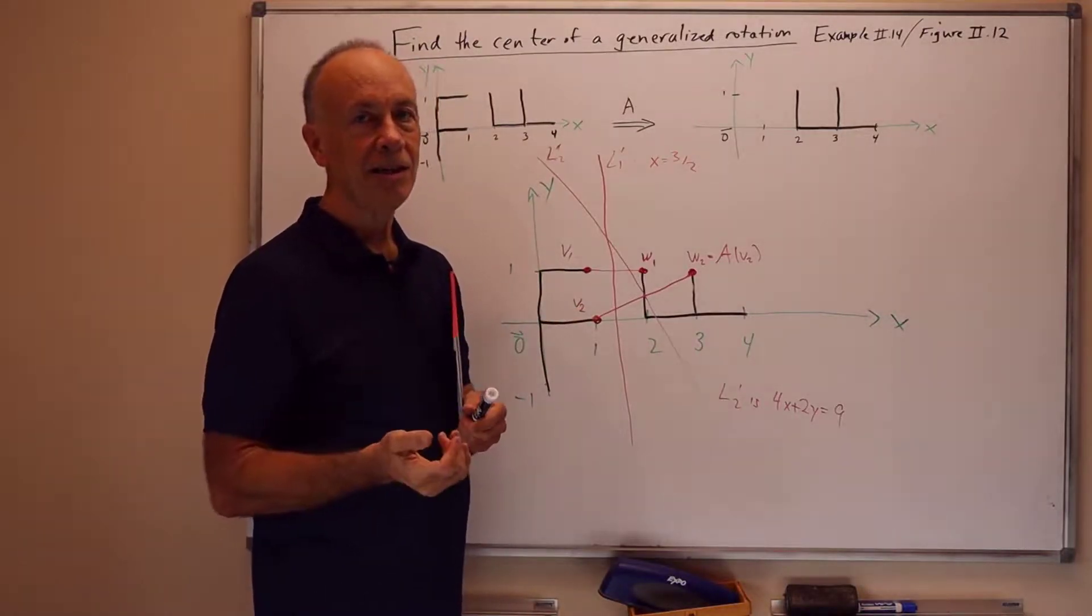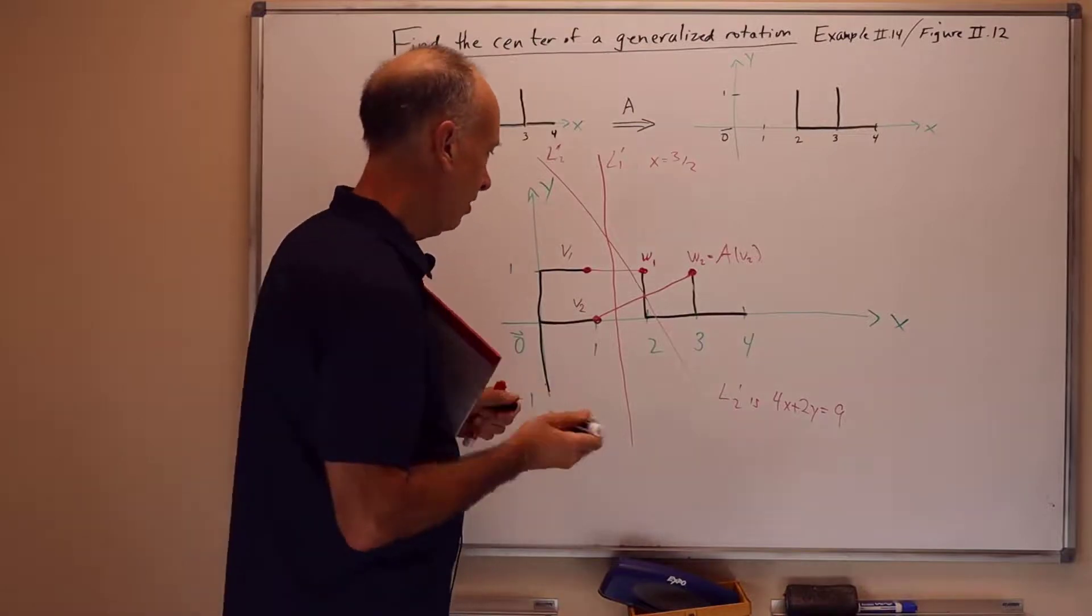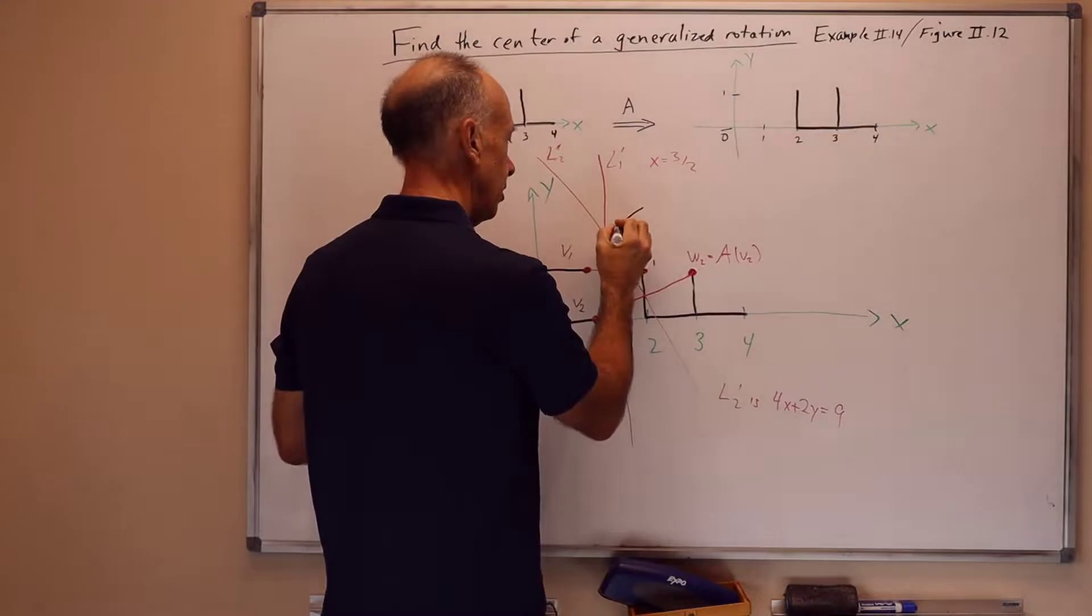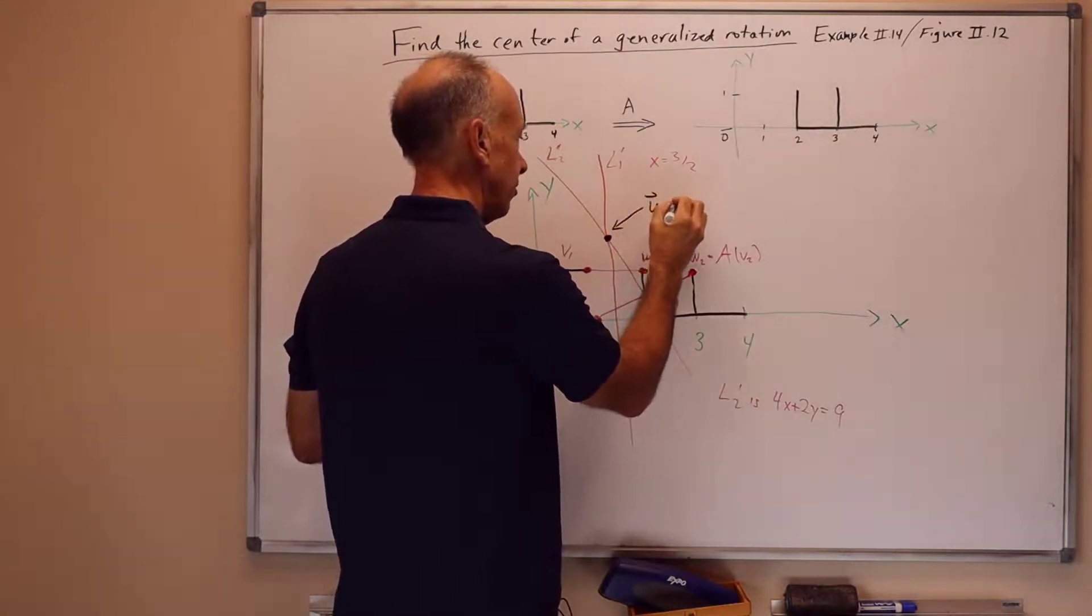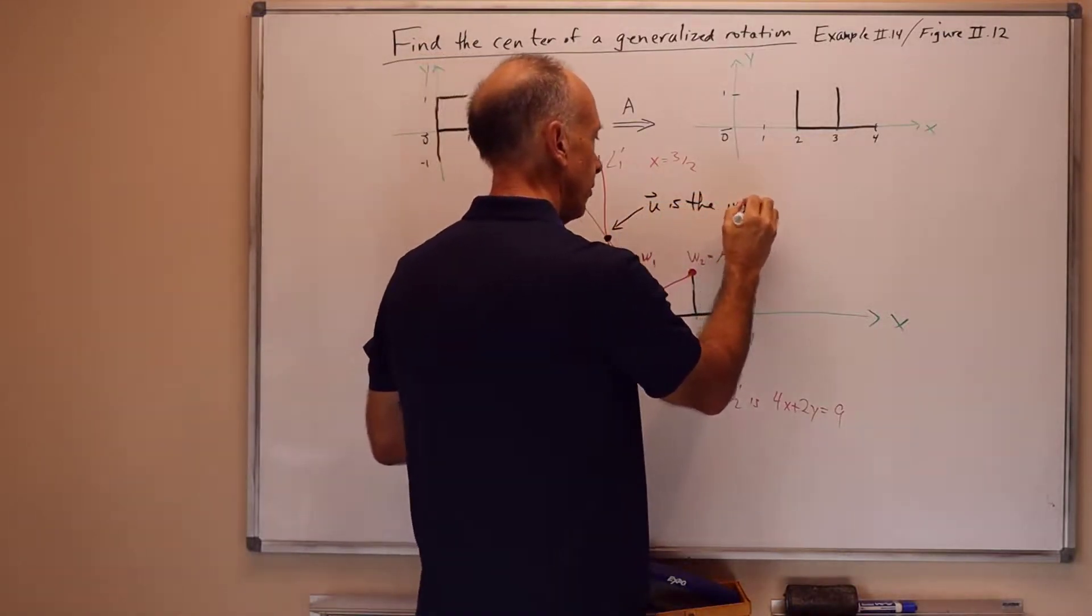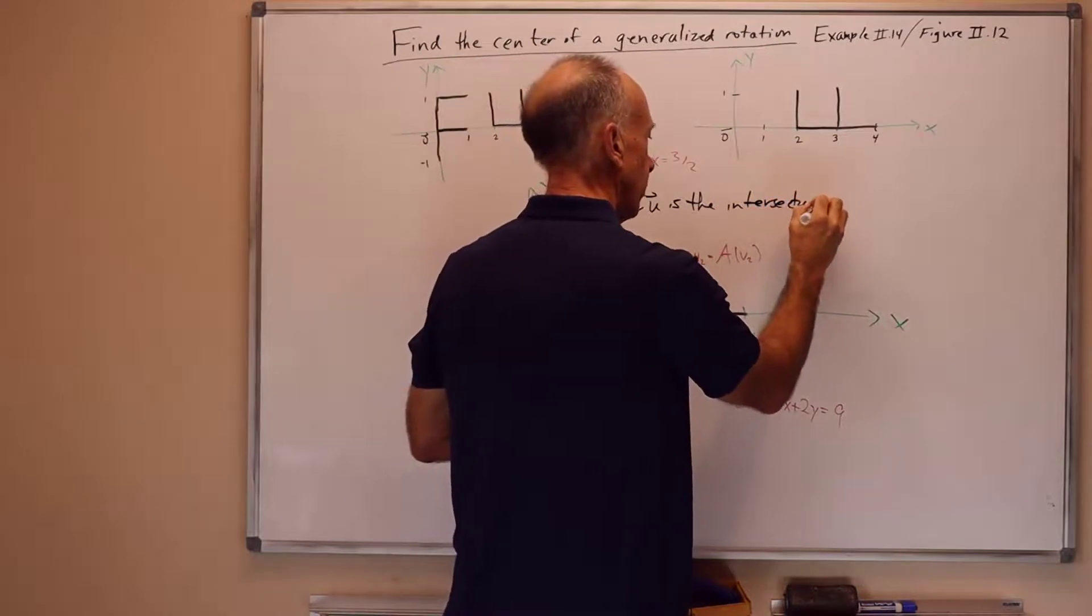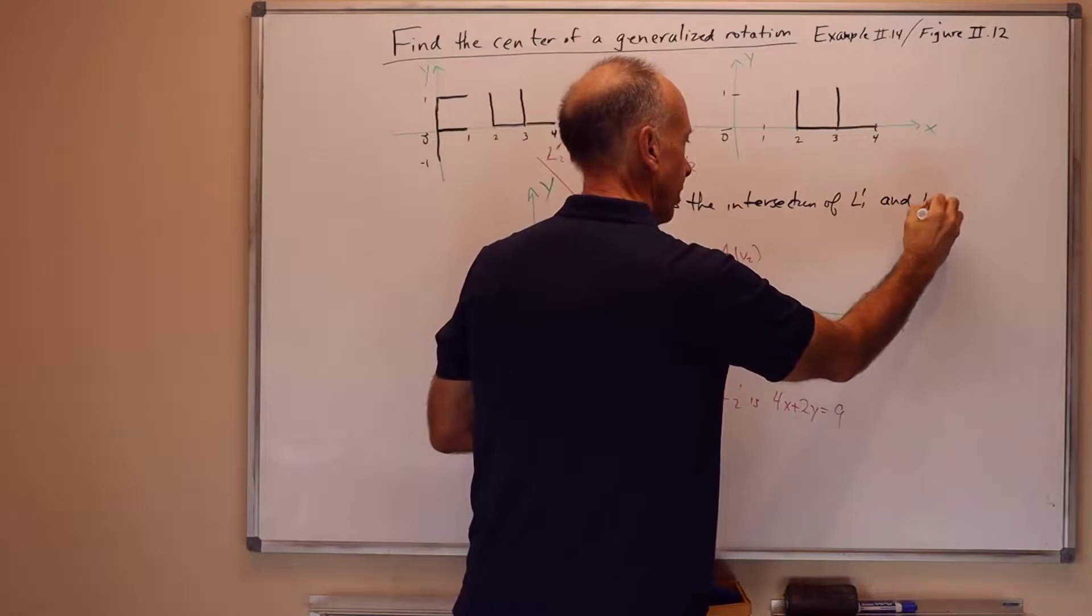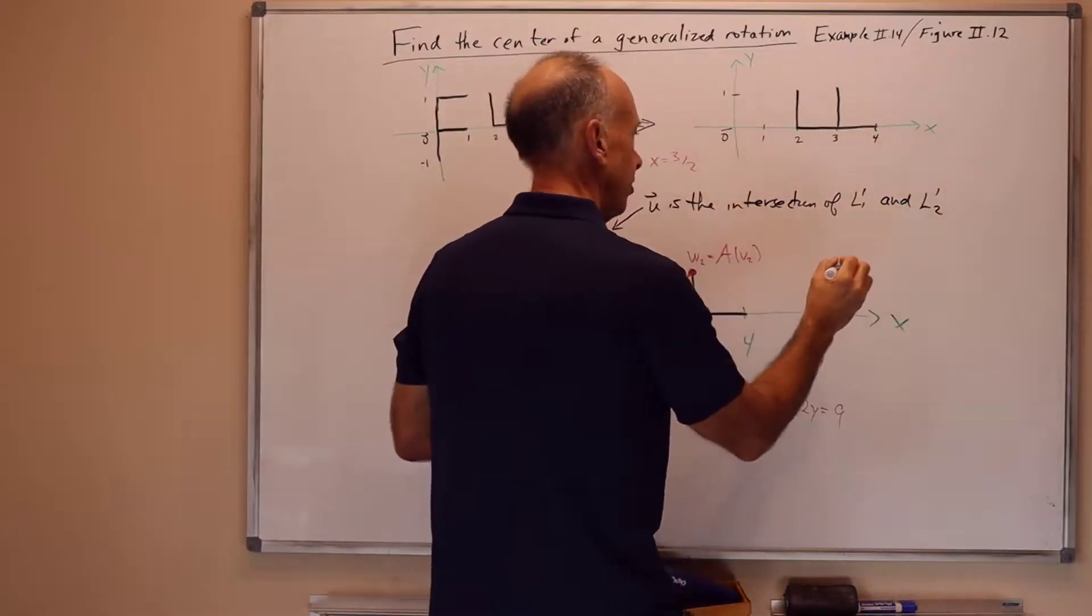And so they both contain u. They both intersect. They're not the same lines, so they intersect at one point. So u is the intersection of l1 prime and l2 prime.